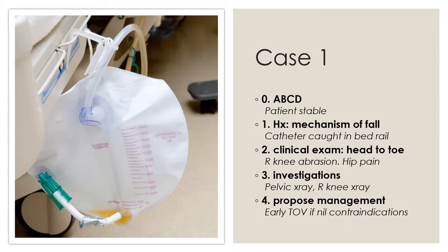Then move on to clinical exam. For any fall, you need to examine from head to toe. Start with the head, look for any injuries — say he didn't have any head strike. Move on to the cranial nerves and do a brief neuro exam of the upper and lower limbs. Then examine for any spinal or joint injuries, feeling especially for the shoulders, hips, chest, rib cages, and knees. Say Bob has right knee abrasion and some hip pain. Then follow on with investigations — his obs are stable and he's not febrile, so perhaps you only need imaging to rule out a pelvic fracture: a pelvic x-ray and a right knee x-ray.